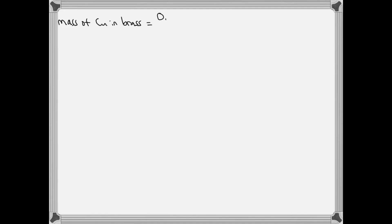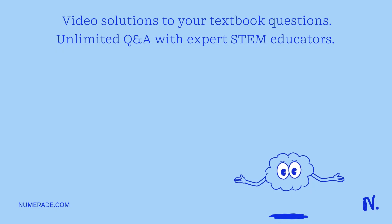I don't have access to your equation, but I assume it is something like this. To calculate the mass of copper in the brass, what you need to do is take a rate.